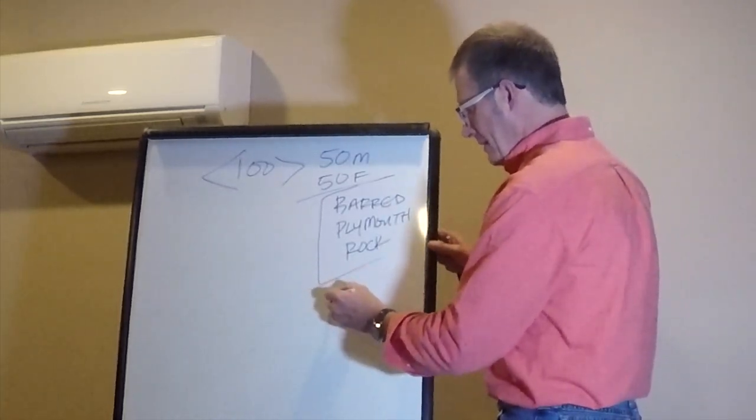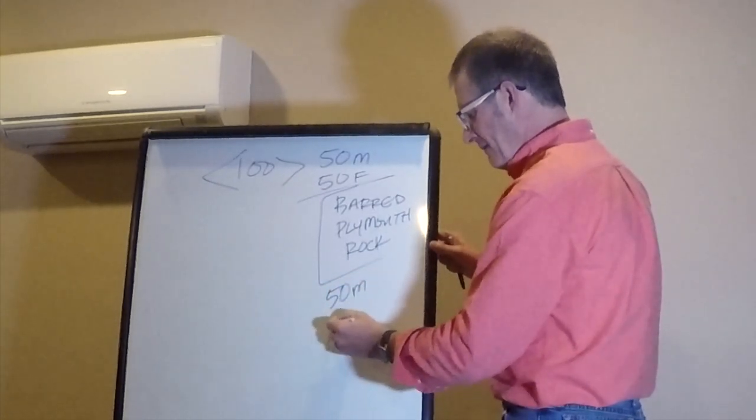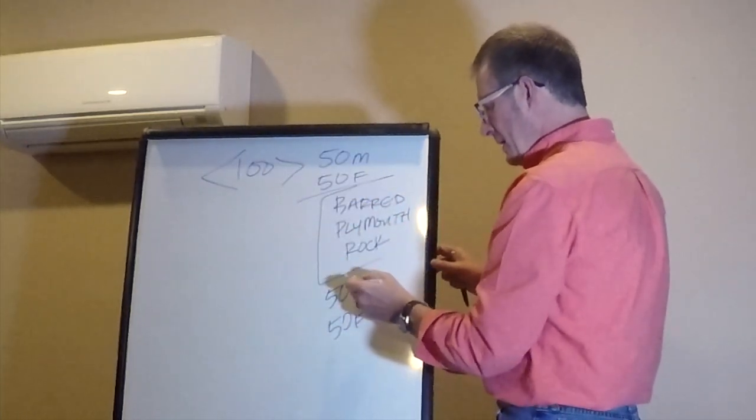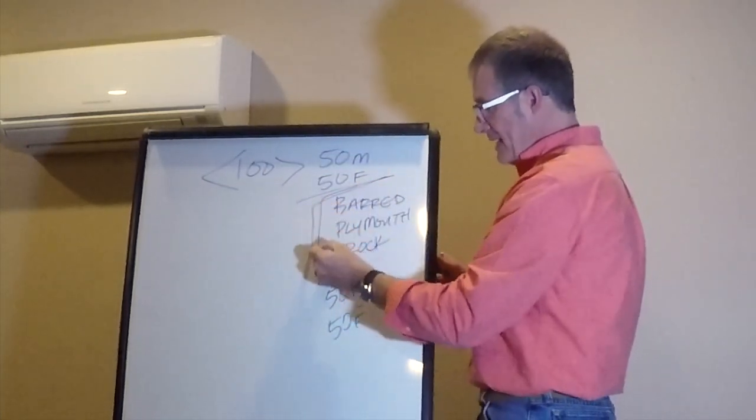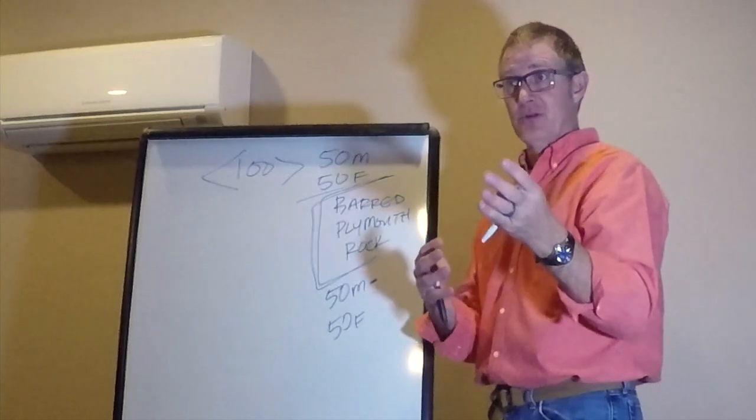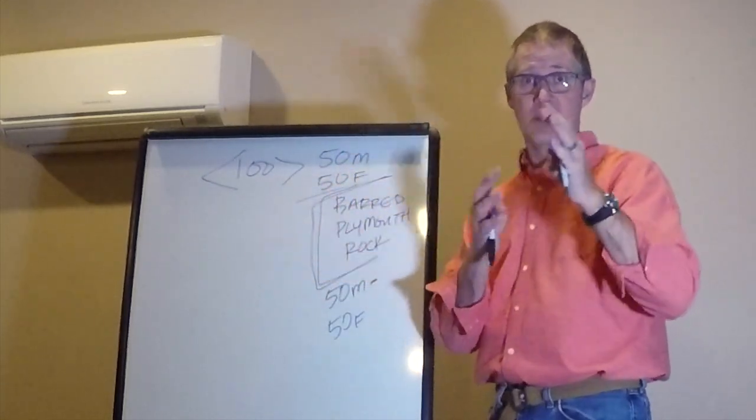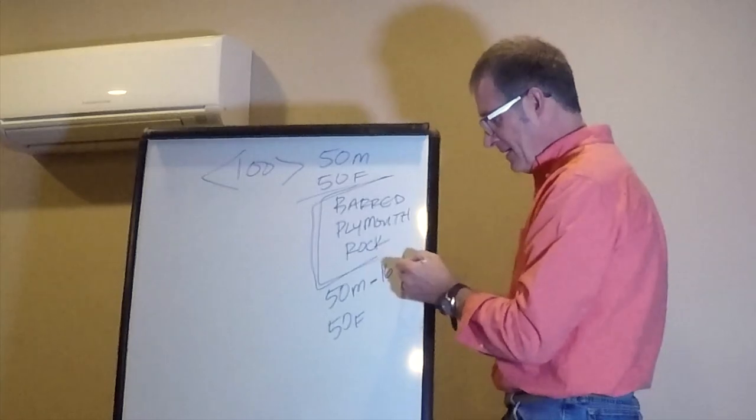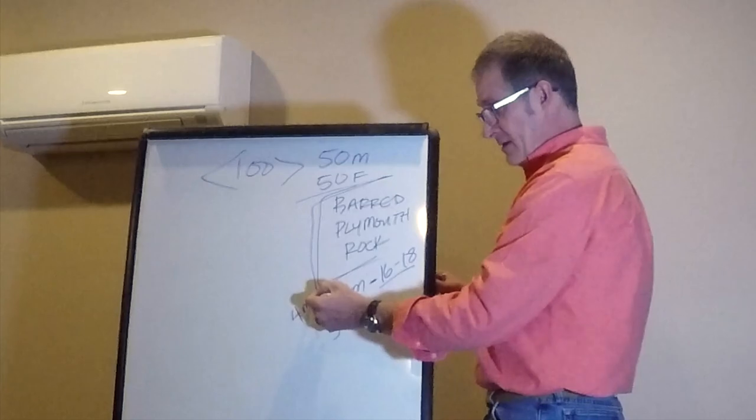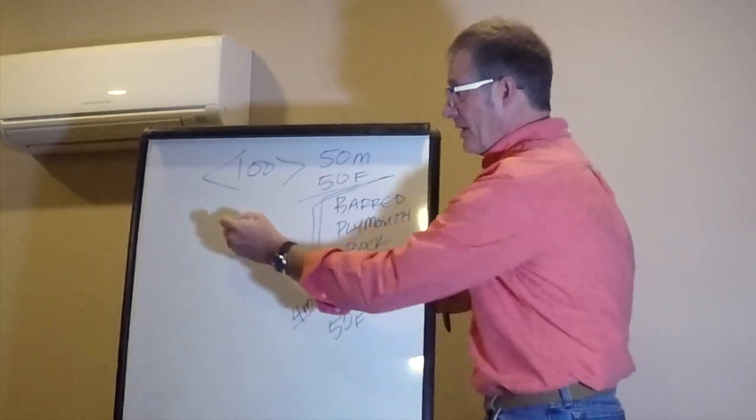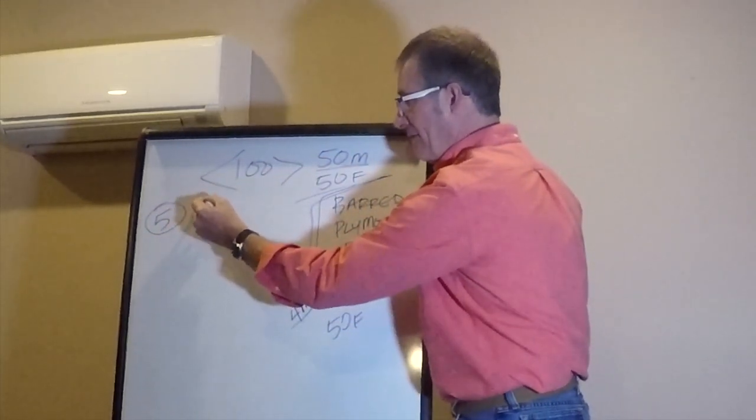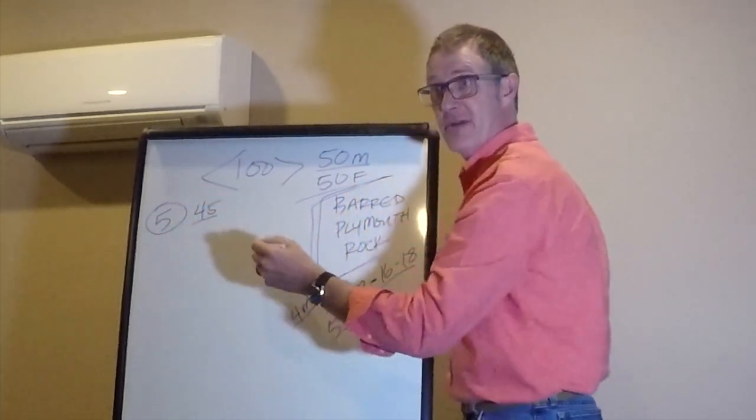With this particular breed, the 50 males, you're going to select them. That means you're going to figure out which males you're going to keep and which males you're going to get rid of at about 16 to 18 weeks, roughly four months. At that time, you're going to keep five of those males. Five out of the 50 males you're going to keep. That means you have 45 males to get rid of.